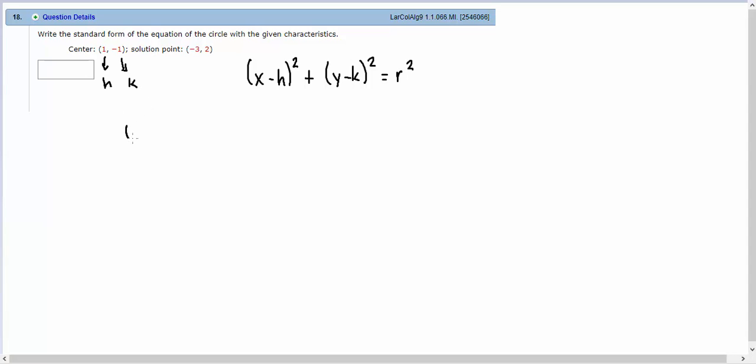So we write x minus, and now h is 1, squared. And then we write y minus, and k in this case is negative 1, squared equals r squared.